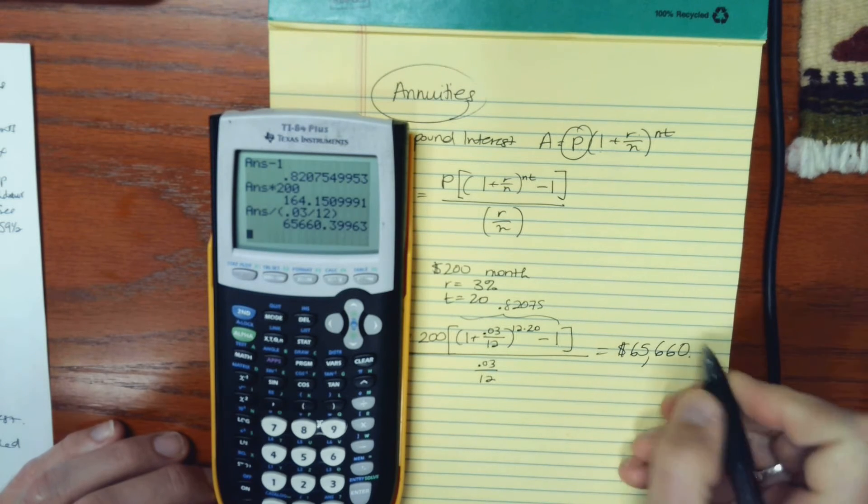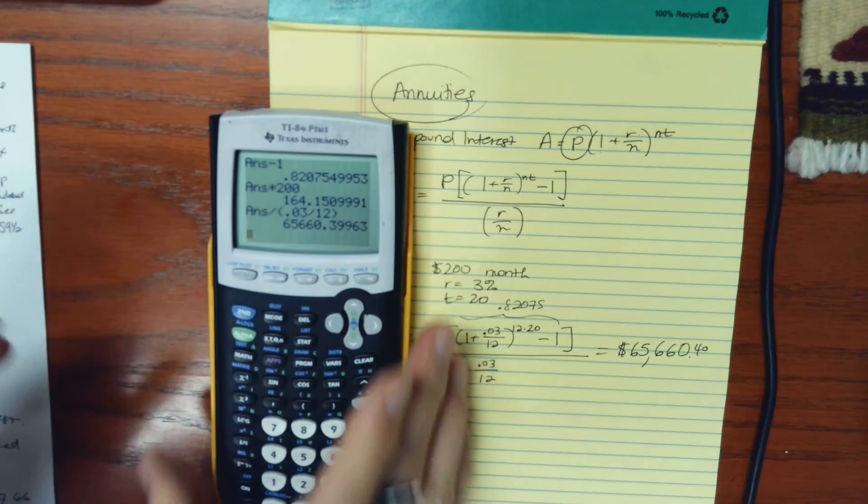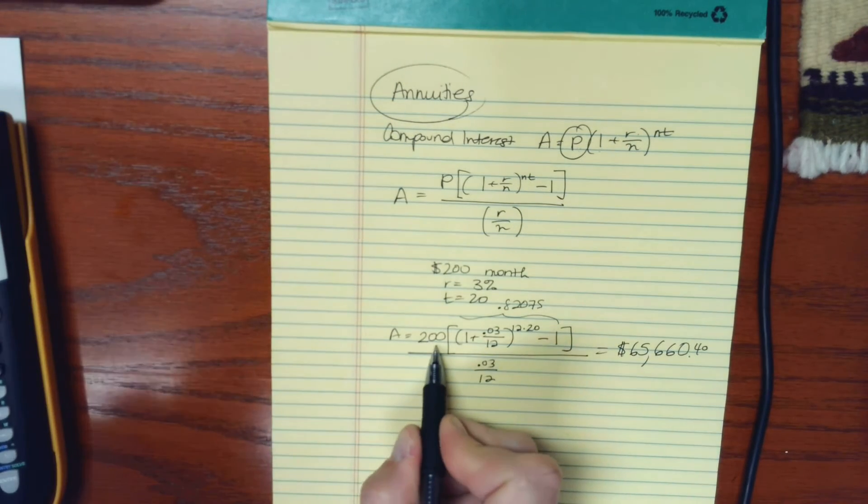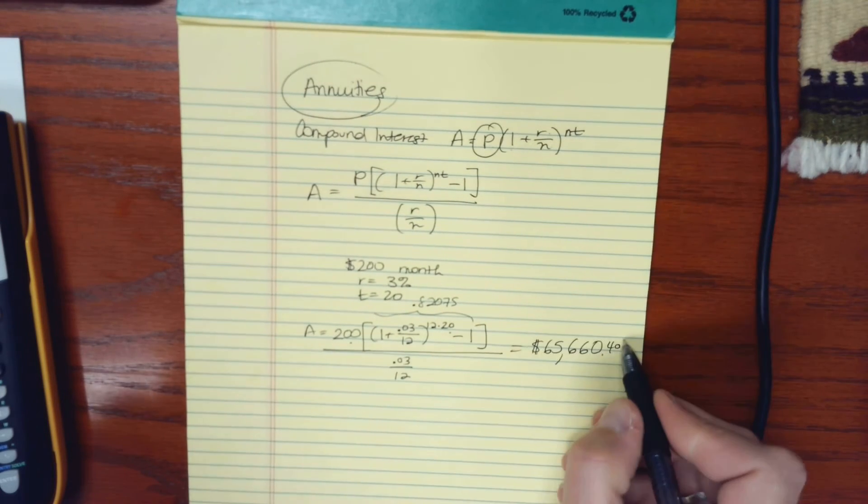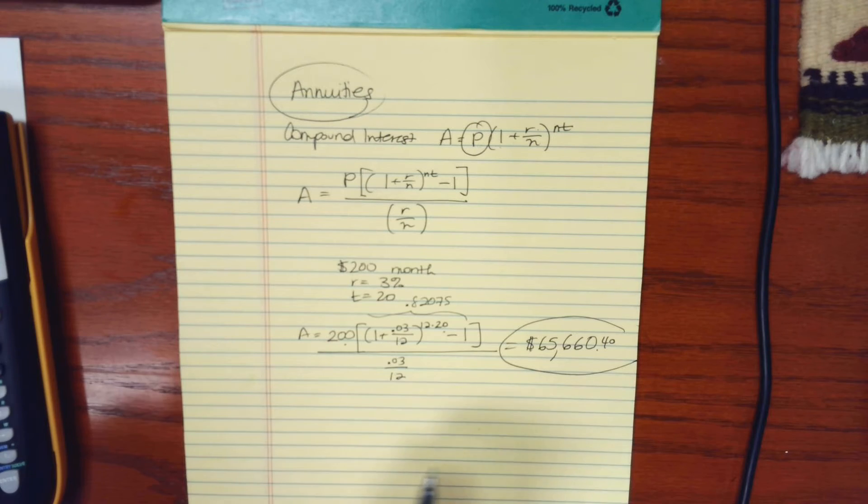So hit enter and this gives me $65,660.40. So if I'm able to set aside $200 a month for 20 years, at the end of that period I can have almost $66,000.